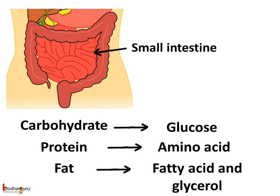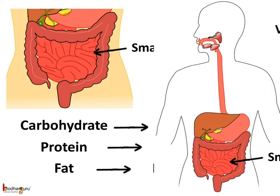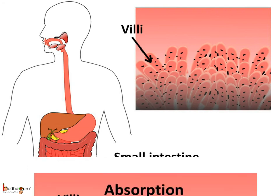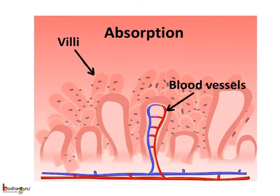The digested nutrients are inside the small intestine — how do they reach other parts of the body? The nutrients get absorbed by the small intestine walls, which are full of blood vessels. The inner wall of the small intestine has small finger-like projections called villi, and each villus has many blood vessels. The finger-like structure increases the surface area of the wall, allowing more blood vessels and more absorption of food. The villi absorb the liquid digested food, and the food enters the blood vessels in the villi.